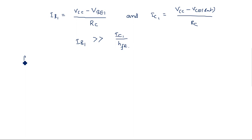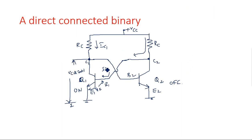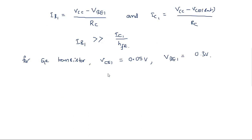For a germanium transistor, VCE1 equals 0.05 volts and VBE1 equals 0.3 volts. Because of the direct connection between the collector of Q1 and the base of Q2, we can directly equate junction voltages. Whatever voltage appears at the collector of Q1 also appears at the base of Q2. So VBE2 equals VCE1 equals 0.05 volts.